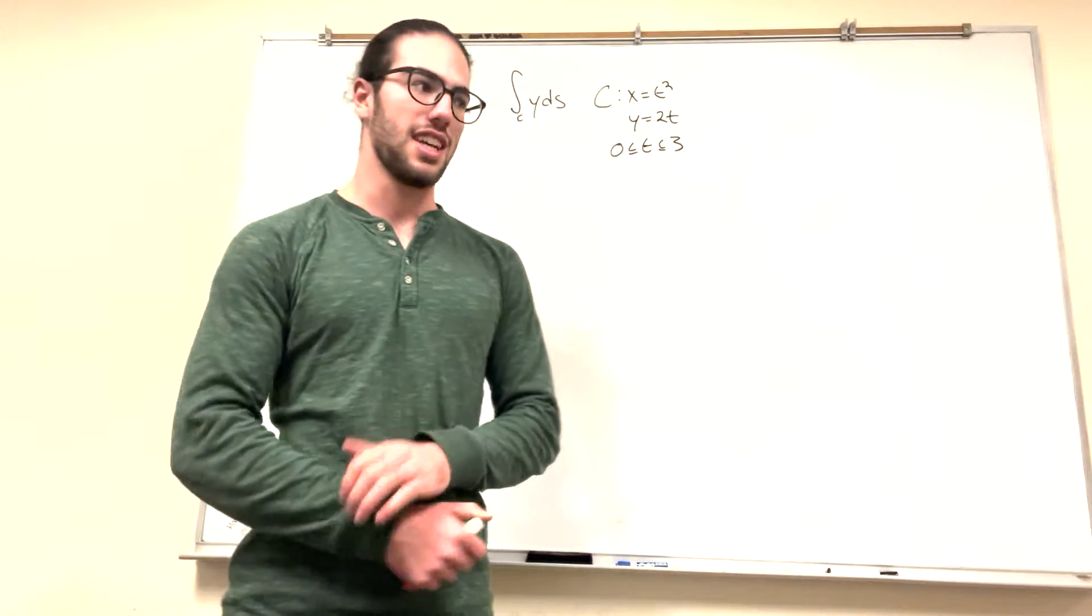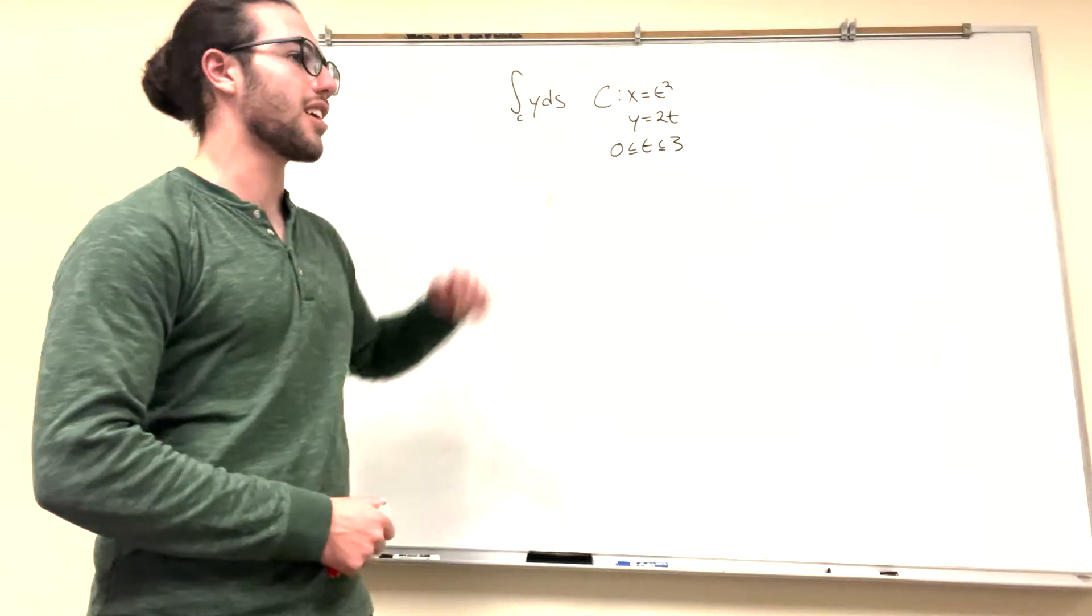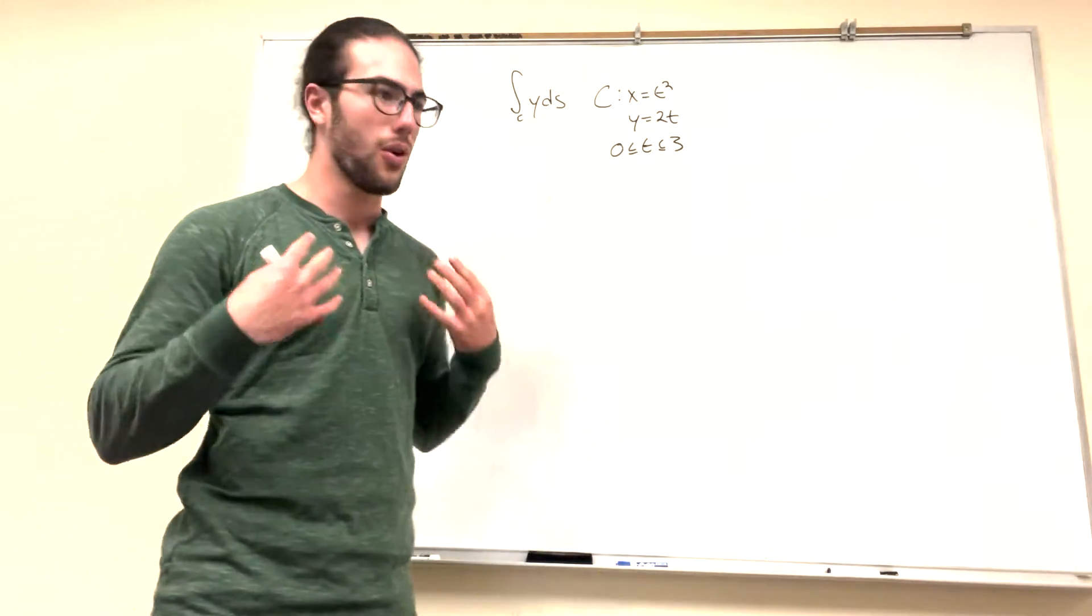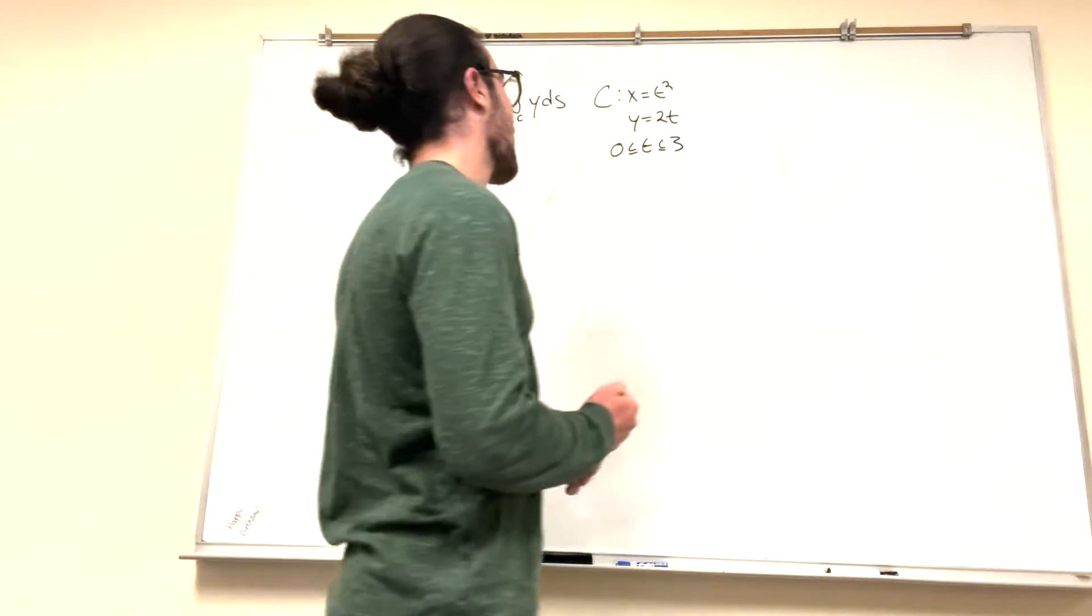Well we need to turn everything in terms of t because here we have y and it's with respect to arc length. We need a formula with just t in it. So how are we gonna do that?